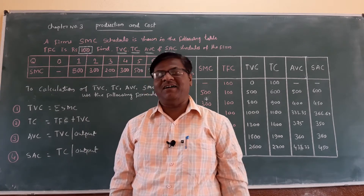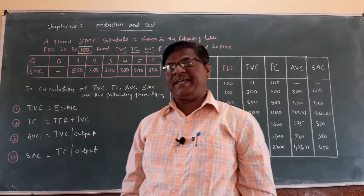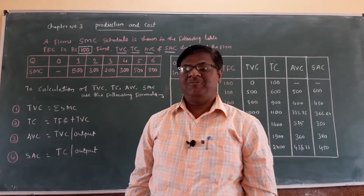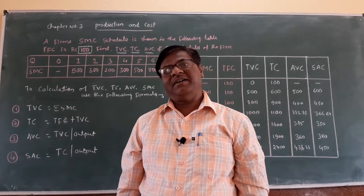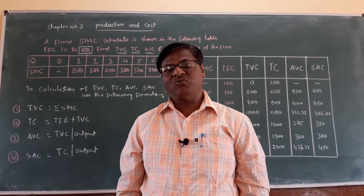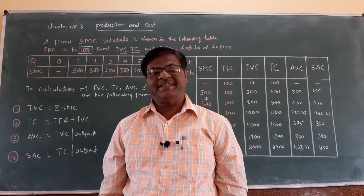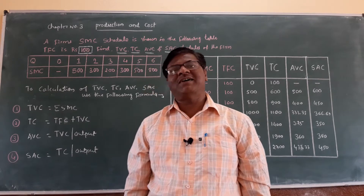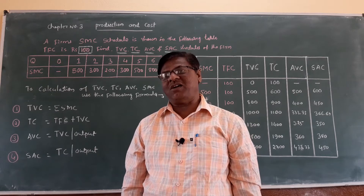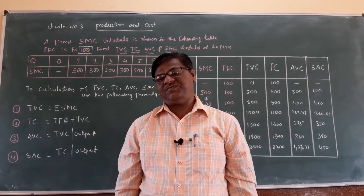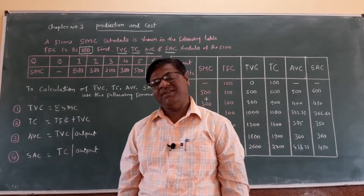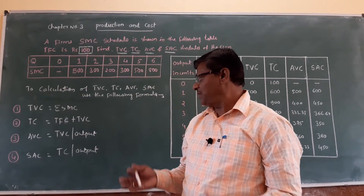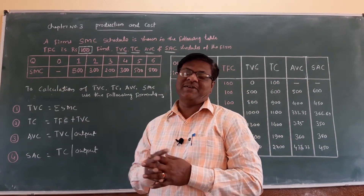According to these data you have to find out TVC, TC, AVC, and SAC. You have to learn how to calculate TVC, TC, AVC and SAC. There is a formula given. According to this formula you have to find out TVC, TC, AVC, and SAC by the formula.